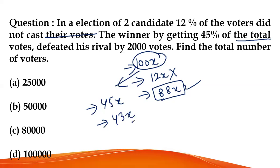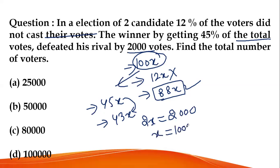The defeat margin is 2x votes, which equals 2,000 votes. So if 2x = 2,000, the total number of votes is 100x = 100,000. So option D gives the total number of voters. This is clear — let's go ahead.